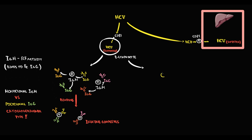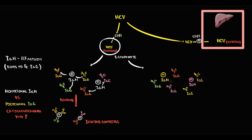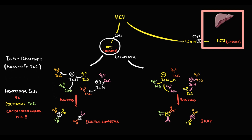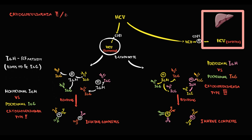In the second scenario, B-lymphocytes produce polyclonal IgM and polyclonal IgG, so all antibodies are completely different. Because IgM in hepatitis C has rheumatoid factor activity, it binds to IgG antibodies, forming immune complexes. The state with immune complexes composed of polyclonal IgM and polyclonal IgG is called cryoglobulinemia type 3. In both types, the immune complexes are highly reactive substances.